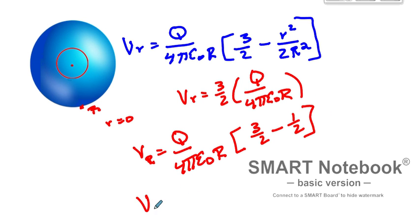So now v sub r is just equal q over 4 pi epsilon not r, which we're not surprised at all because all of the charge looks like it's going to come from the center. This is just the usual equation just for potential.